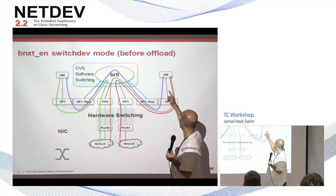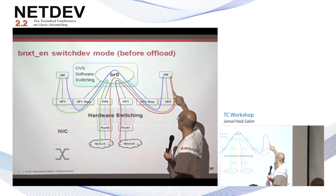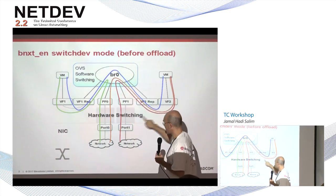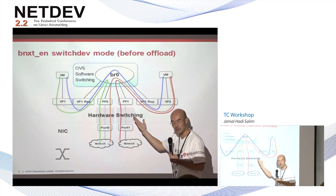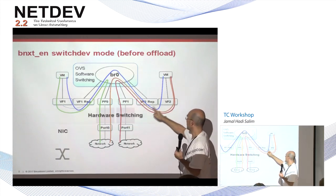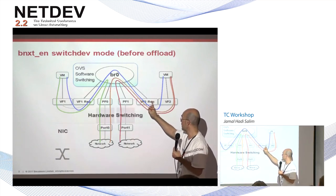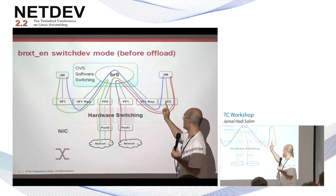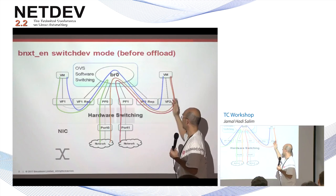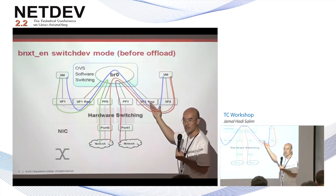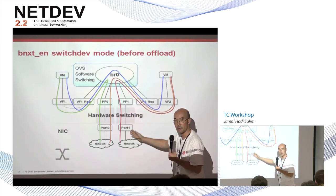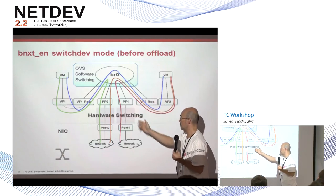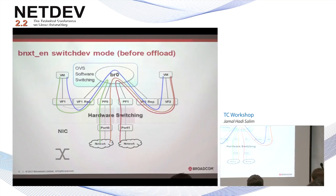We accept NDO setup TC on the VF representatives and on the PFs. That way the user can insert a TC filter saying: if it matches on this flow — maybe L2, maybe L3 — redirect it to the port. After we accept that and download it successfully, that TC filter will now be inside the switch and it will switch directly.